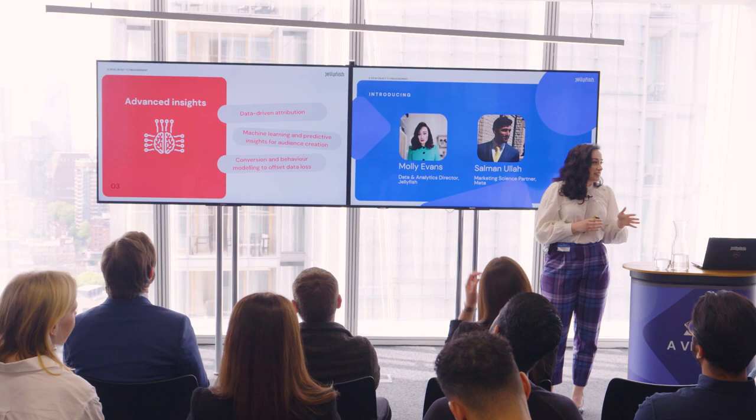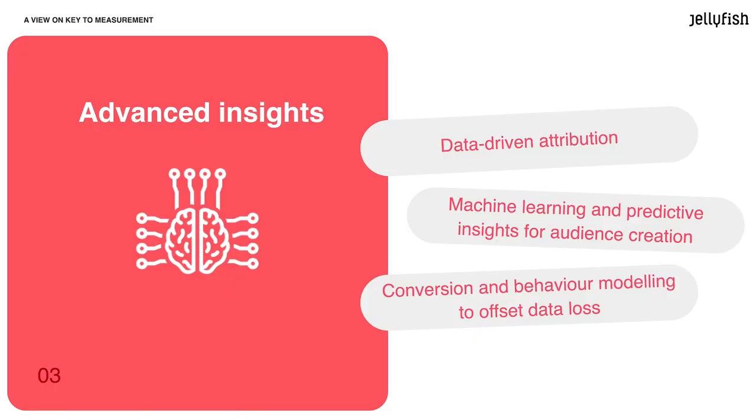I want to talk about some of the advanced analysis and insight capabilities that are present in GA4. One thing to be aware of — which feeds right back into data collection and measurement strategy — is the machine learning and predictive insight capabilities GA4 now has. These will inform how you design your measurement collection strategy in the first place. For example, when thinking about your property structure and how you'll make use of sub-properties and roll-ups, you should always keep that in mind.